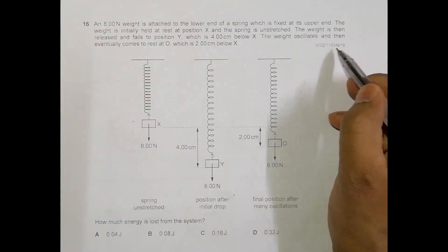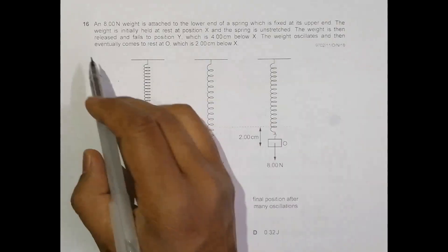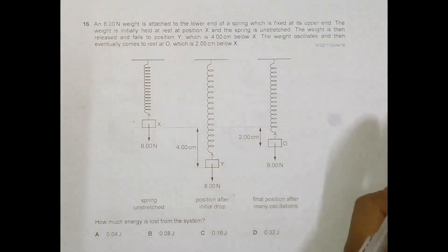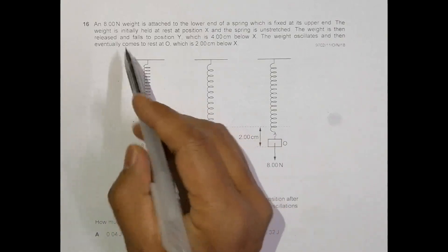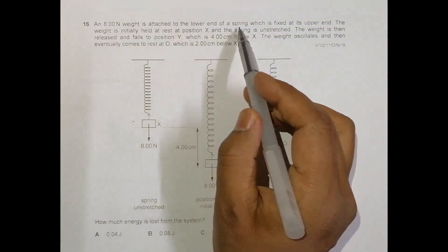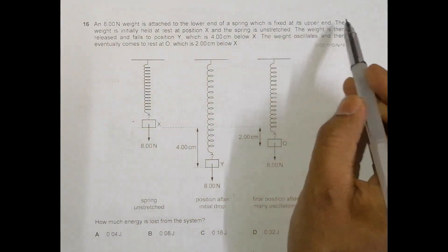Hello folks, this is a 2018 October November paper 1 question number 16. It is concerned with the chapter deformation of solids, just about a spring as you can see from the diagram. It says that an 8.00 Newton weight is attached to the lower end of a spring which is fixed at its upper end.